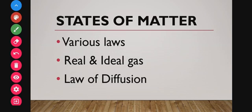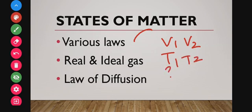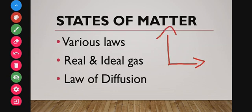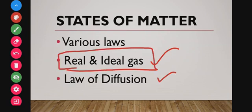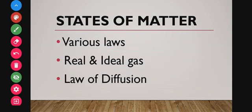For states of matter, you need to know various gas laws — Charles' law, Boyle's law, the ideal gas equation, Avogadro's law — and the relationships between them. Problems involve finding unknown variables (initial or final temperature and volume) given the others. You also need to learn pressure-volume, volume-temperature, and pressure-temperature graphs. For real versus ideal gas: the compressibility factor, real gas equation, van der Waals constants a and b, Graham's law of diffusion, and critical temperature and pressure.